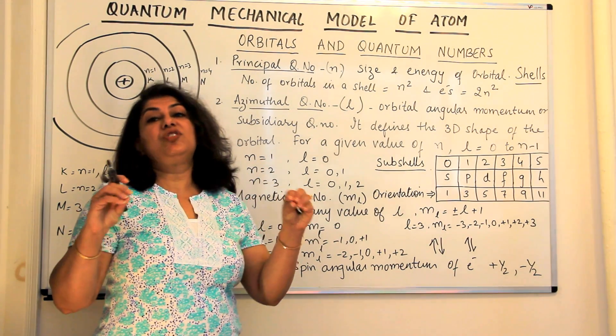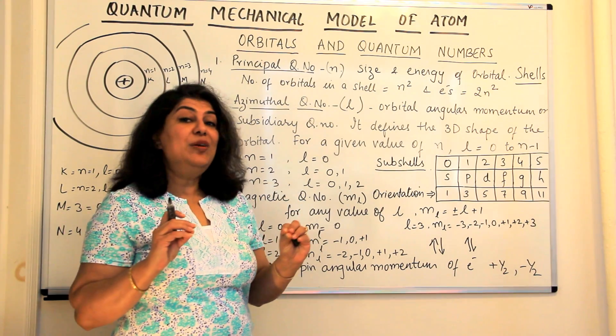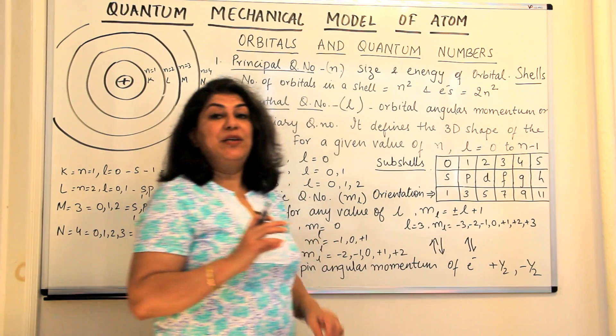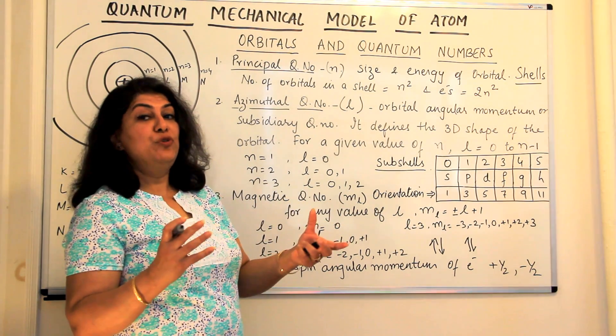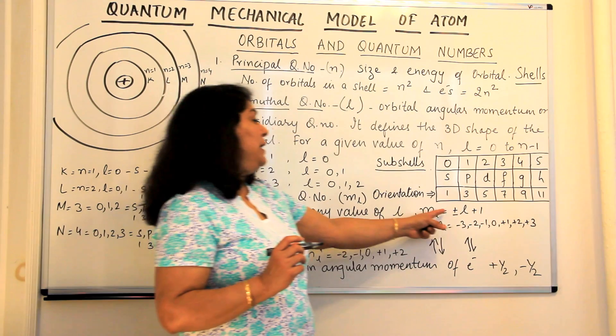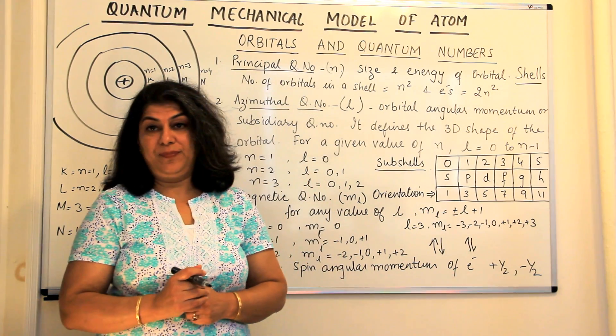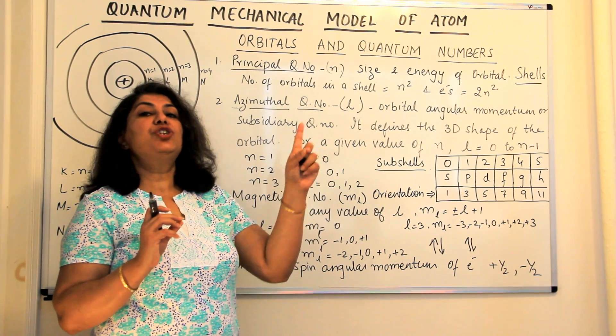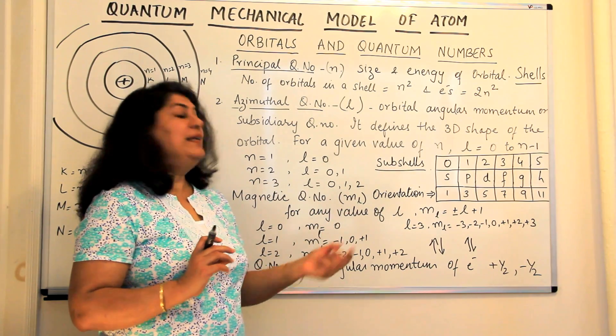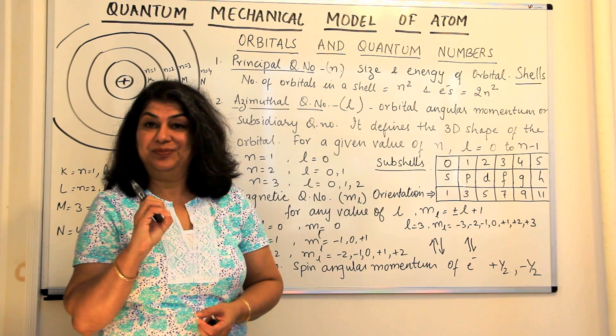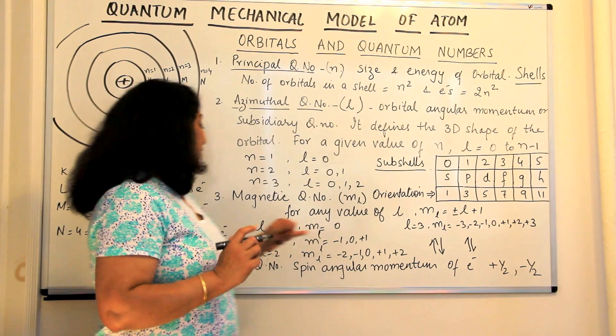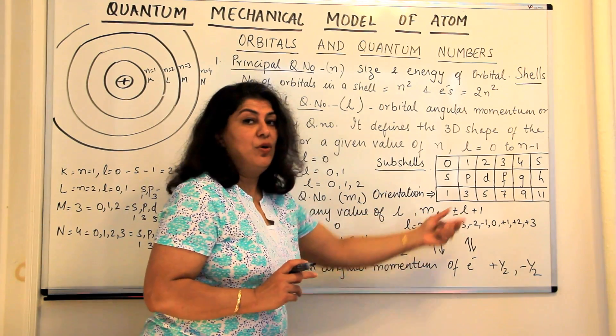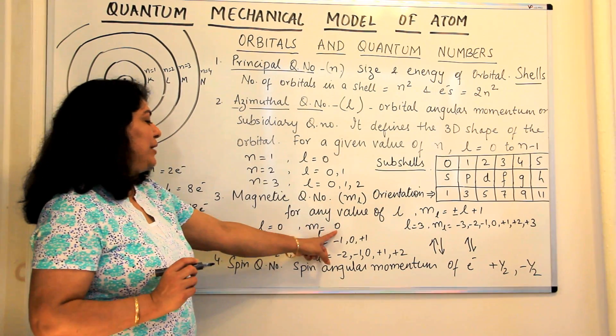Let us see how do we calculate. The number of rooms in an apartment can be calculated from its value of l. If the value, whatever is the value of l, the number of values or number of rooms or orbitals in it would be plus minus l plus 1. The value would be plus minus whatever is the value of l and in addition to it one more number. And that 1 is actually the digit 0. In other words, you could say that if the value of l is 0, then ml would be plus minus 0 is 0, plus 1 would be 1 value and that first value is 0.